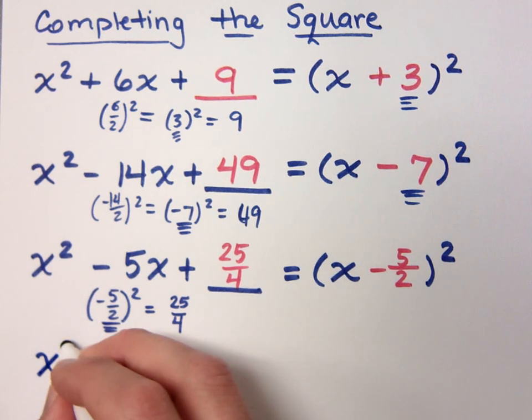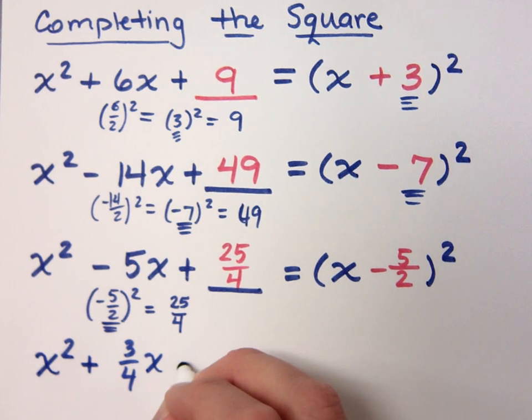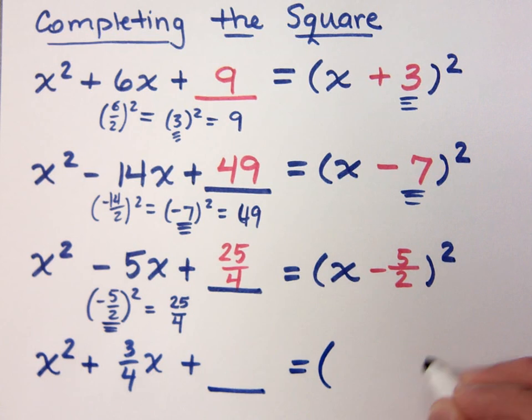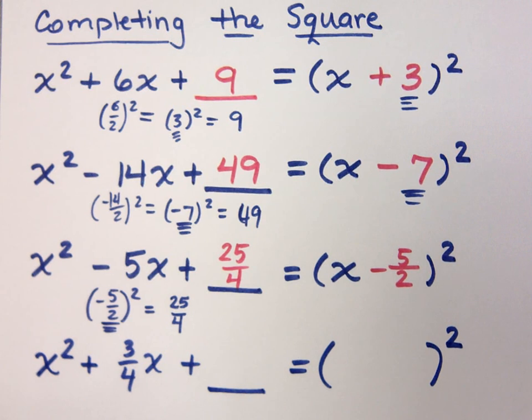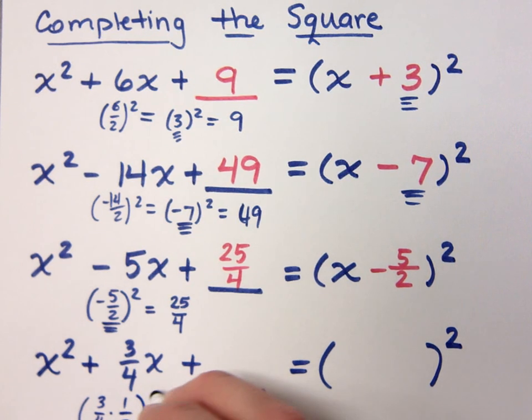Let's try another one. X squared plus 3 fourths X plus what is going to give me a binomial square? We said divide by 2 and square it, right? So, instead of dividing by 2, there's an easier way, especially when I start off with something that's a fraction. You don't really want to divide a fraction by 2. What's another way to say divide by 2? Another way of dividing by 2 is taking half of something, right? So, that means multiplying times 1 half. So, if I were to take the 3 fourths here, multiply times 1 half, and then square it, I'm going to get my special number.